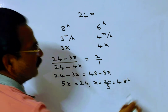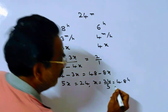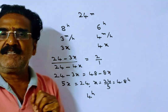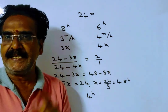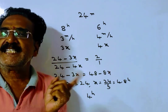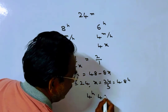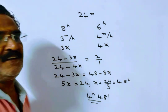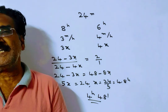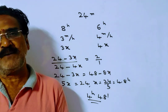So x equals 4.8 hours. Now, 0.8 hours means 8 by 10 into 60, which equals 48 minutes. So the answer is 4 hours 48 minutes. After 4 hours 48 minutes, the ratio of the remaining heights of the candles will be 2 is to 1.